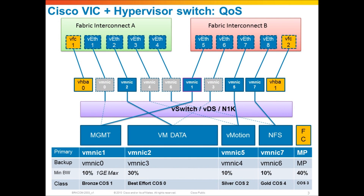Here is one design example using a Cisco VIC in a VMware machine. We're going to use the QoS capabilities discussed previously to provide guaranteed bandwidth to different types of traffic in your VMware implementation. We've got a VMware host running vSwitch, virtual distributed switch, or Nexus 1000v, with up to eight virtual NICs defined on the adapter, plus a couple of VHBAs for Fibre Channel over Ethernet. In the VMware configuration, we have multiple port profiles for management, VM data, vMotion, NFS, and Fibre Channel — which the adapter manages behind the scenes.